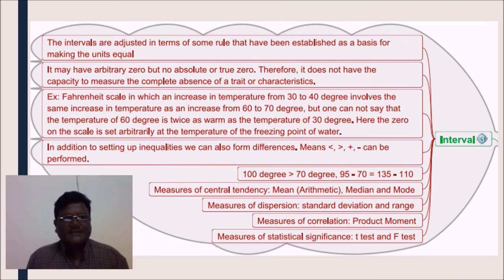The intervals are adjusted in terms of some rules that have been established as a basis for making the units equal. It may have arbitrary zero but no absolute or true zero. Therefore, it does not have the capacity to measure the complete absence of a trait or characteristics. Example, Fahrenheit scale in which an increase in temperature from 30 to 40 degree involves the same increase in temperature as an increase from 60 to 70 degree. But one cannot say that the temperature of 60 degree is twice as warm as the temperature of 30 degree.